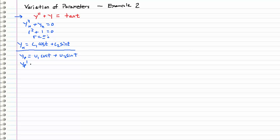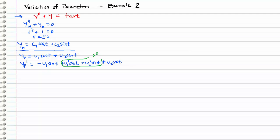Let's differentiate this twice. yp prime is equal to negative u1 sine t plus u1 prime cosine t plus u2 prime sine t plus u2 times cosine t. Don't forget the constraint we have to impose: these two terms — u1 prime cosine t and u2 prime sine t — must sum to zero. That constraint prevents higher-order derivatives from entering the problem. So I'll rewrite yp prime as negative u1 sine t plus u2 times cosine t.